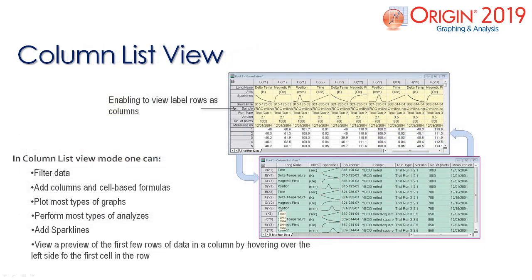New to Origin 2019 is the column list view, which allows users to view only the metadata in a worksheet. This is especially useful for users who have large columns of data. You can also select entries from the list to plot and perform most analysis.